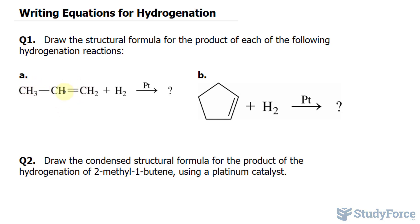We have the following alkene. There's a double bond right in between C1 and C2. And we're adding hydrogen gas to it in the presence of platinum, which acts as a catalyst.